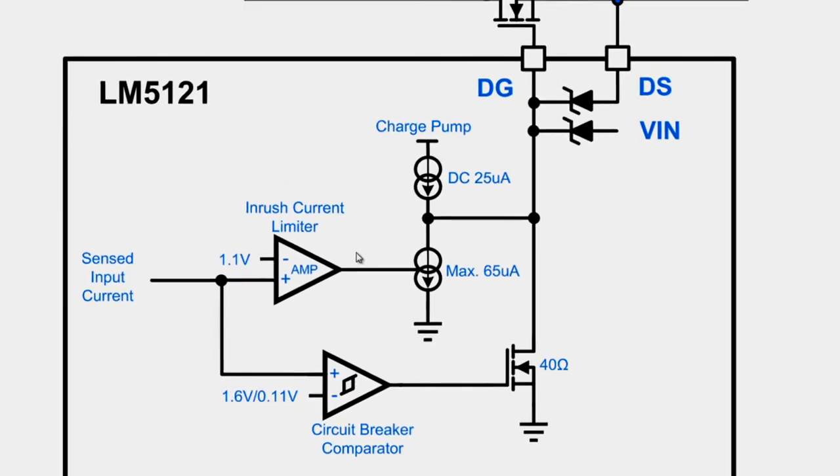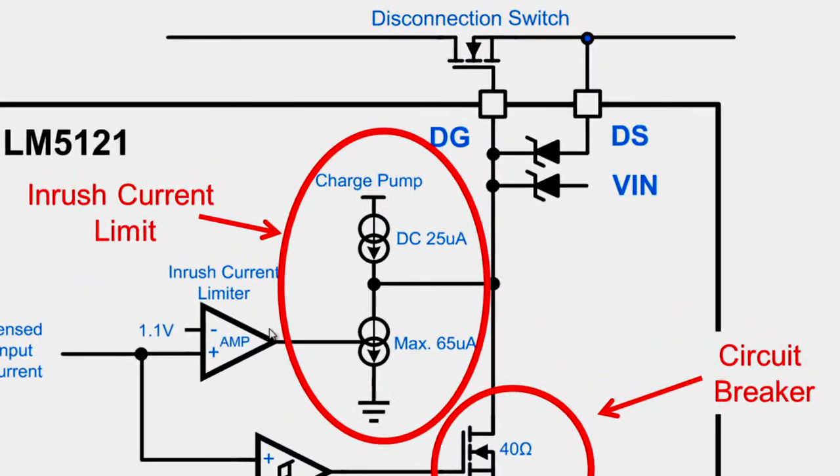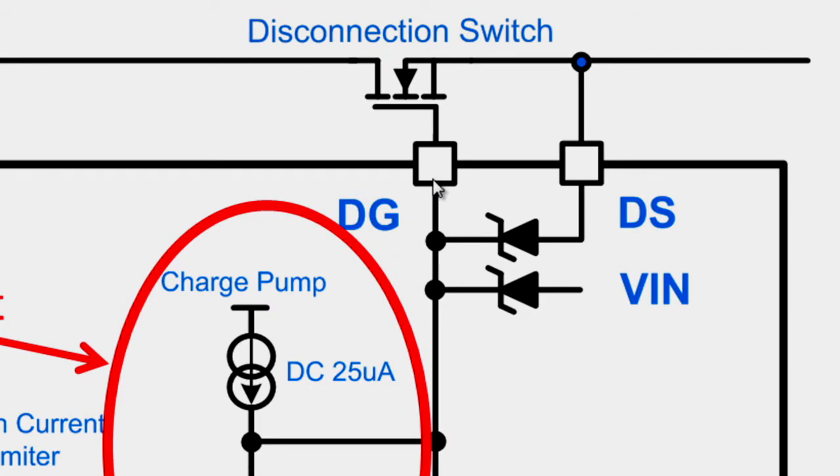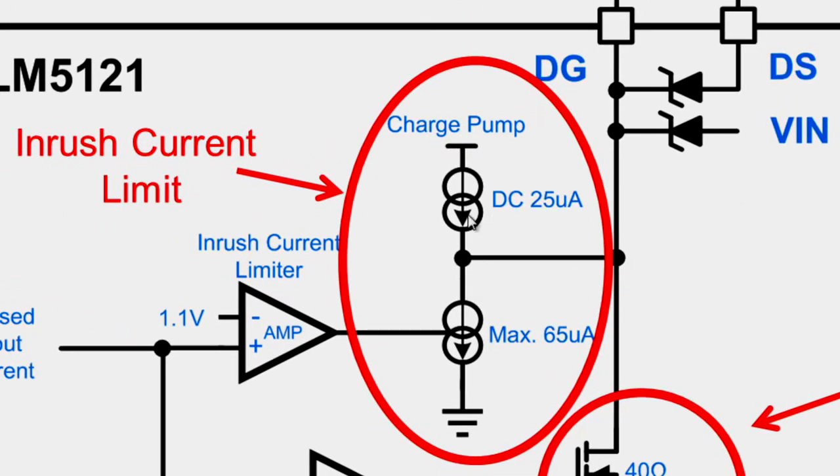To limit the inrush current, LM5121 controls the gate-to-source voltage of the disconnection switch using a DC current source and a variable current sink controlled by the amplifier.